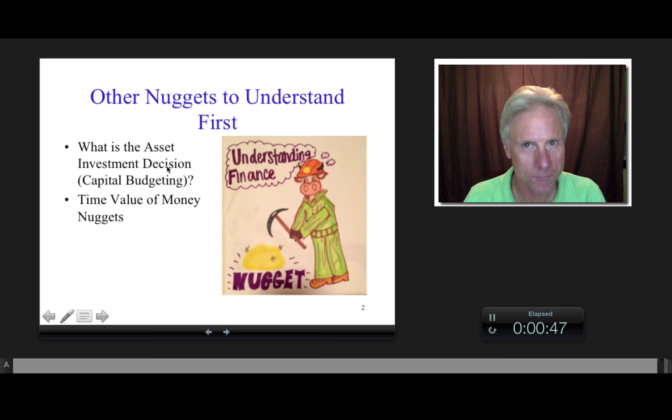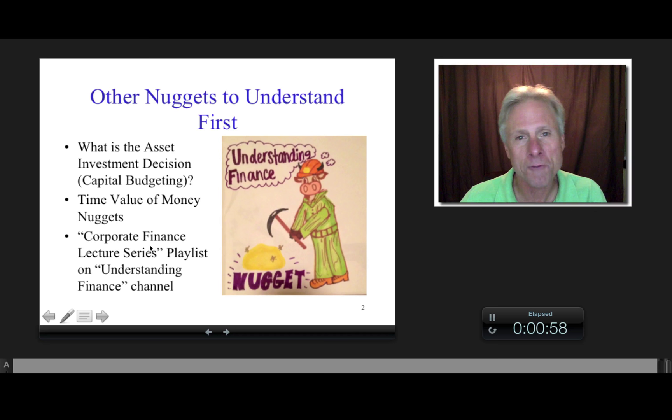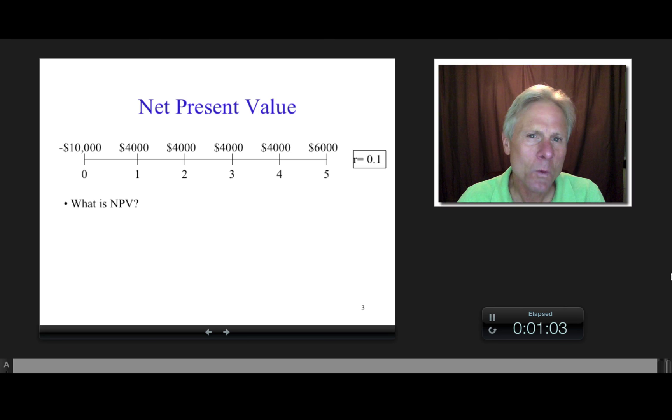And also, I'm assuming you have a good understanding of time value of money. And then of course, you can always go to the Corporate Finance Lecture Series playlist, where all of this stuff is in order. So, what is net present value? Well first of all, I'm assuming we know the relevant cash flows and also the discount rate, which of course is provided or will be in other nuggets or the lecture series.